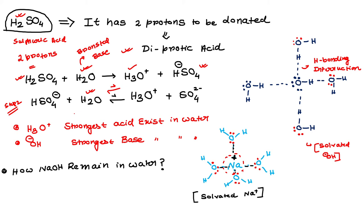I will discuss this more in detail when I talk about the pKa value of acids. Another important point: H₃O⁺, the hydronium ion, is the strongest acid that exists in aqueous solution — no acid is stronger than H₃O⁺ in water. Similarly, the hydroxide ion OH⁻ is the strongest base that exists in water. These are always in reference to the aqueous medium.